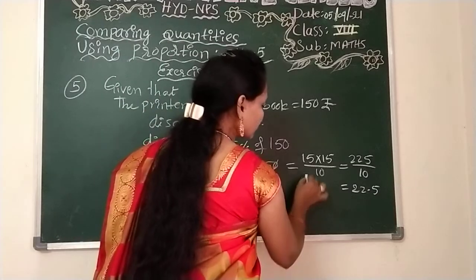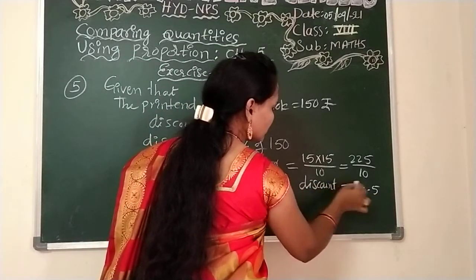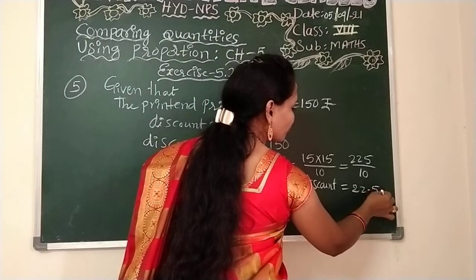From the right side, one digit after, we should take the decimal point. Very simple. Now discount we got it, 22.5 rupees.